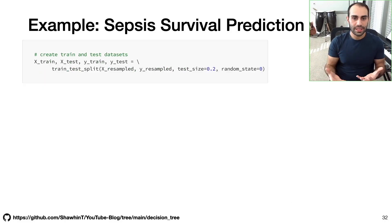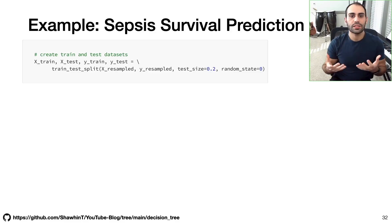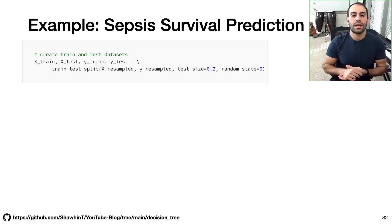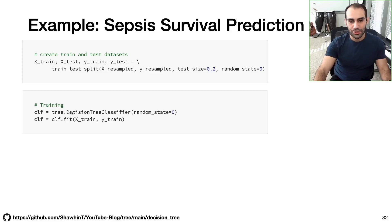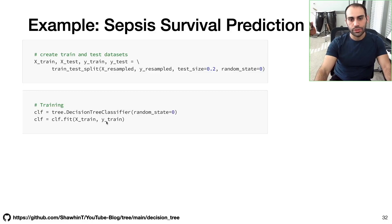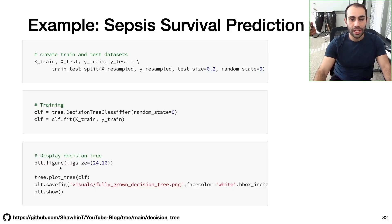Now that we have balanced our dataset, we can create our training and testing datasets. The training dataset will be used to grow our decision tree, and the testing dataset will be used to evaluate its performance. We use an 80-20 split — 80% for training, 20% for testing. Growing the decision tree is very straightforward with just two lines of code: first we initialize the decision tree classifier, then we fit our decision tree to our data. We have our decision tree.